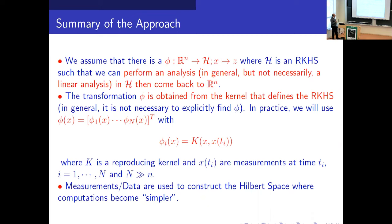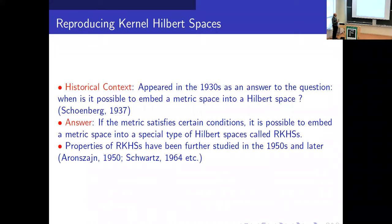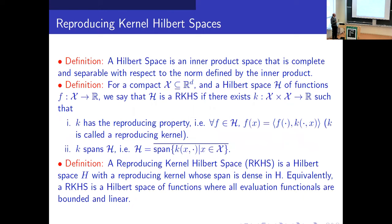The historical context: kernel methods appeared in the 1930s as an answer to the question of when it is possible to embed a metric space into a Hilbert space. The answer was given by Schoenberg — that if the metric satisfies certain conditions it's possible to embed a metric space into a special kind of Hilbert space called an RKHS. There were many studies in the 50s and 60s by Aronszajn and Schwartz, then the field died a little and was resurrected in the 90s by Wahba and then Smale in the early 2000s. I'll skip this since everyone here likely knows these things.